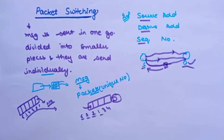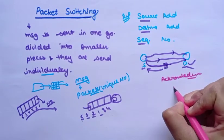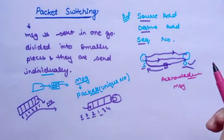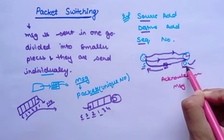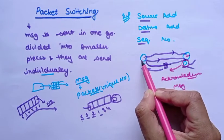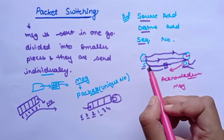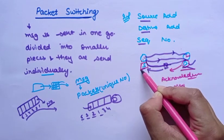If the packets arrive at the destination in the correct order, an acknowledgment message is sent back to the source. This acknowledgment tells the sender side that the data transmission was completed properly or not.